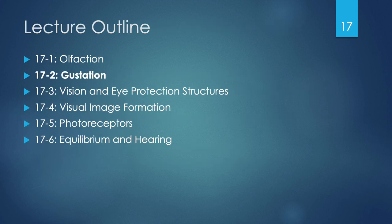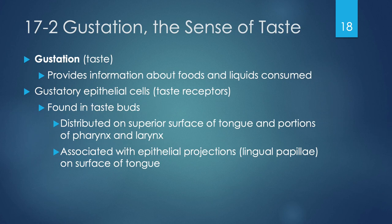Now let's discuss gustation, or our sense of taste, in section 17.2. Gustation provides us with information about our foods and the liquids we consume, and this is done by epithelial cells that are taste receptors. You'll find these taste receptors in taste buds distributed throughout our tongue and also in portions of our pharynx and larynx. These are associated with a variety of epithelial projections called lingual papillae, located primarily on the surface of your tongue.